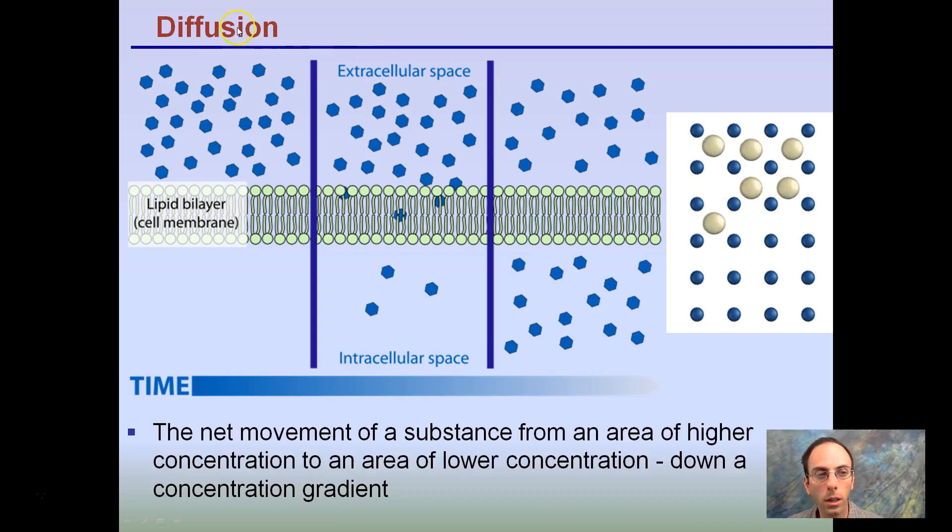So diffusion, here we have a bunch of blue molecules in our extracellular space, diffusing across our semi-permeable lipid bilayer, and over time they become evenly distributed in the outside and inside of the cell. You can see here our little tan spheres slowly diffusing throughout these molecules, becoming more evenly spaced out. So it's the net movement of a substance from an area of higher concentration to an area of lower concentration, down a concentration gradient.